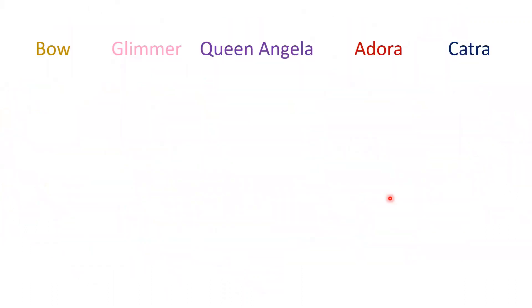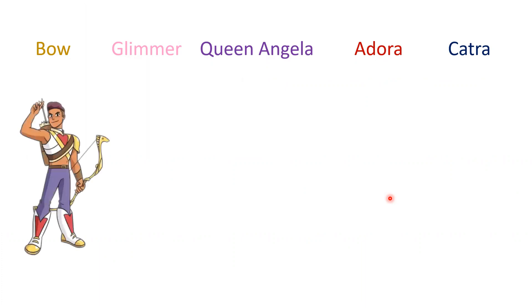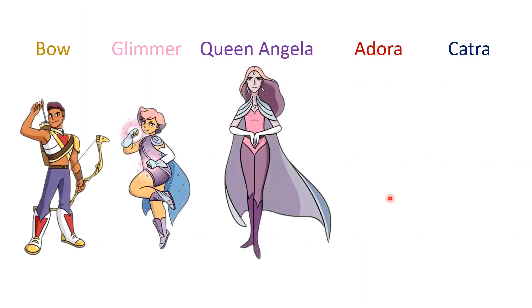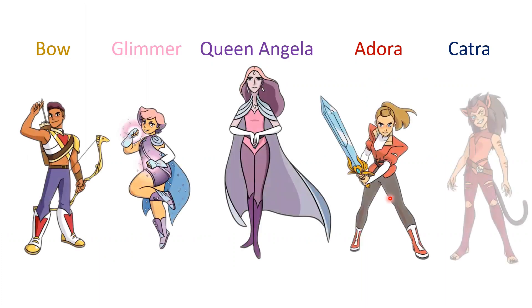Here we have the characters that are part of our network. We have Bo, Glimmer, Queen Angela, Adora, and Catra. We also have the portal and the fate of Etheria.